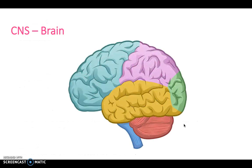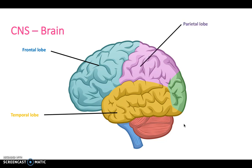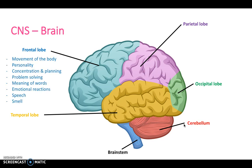The first functional part is the brain, and this can be split up into different lobes. We have the frontal lobe, the temporal lobe, the parietal, and the occipital. Down here we have the brainstem and the cerebellum as well. The frontal lobe is all about movement of the body, control of our personality, concentration and planning, problem-solving, meaning of words, emotional reactions, speech, and smell.